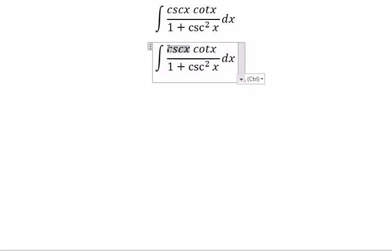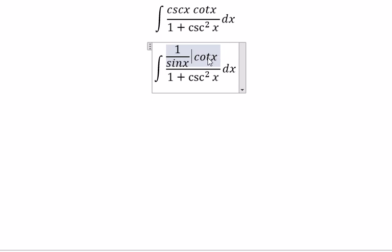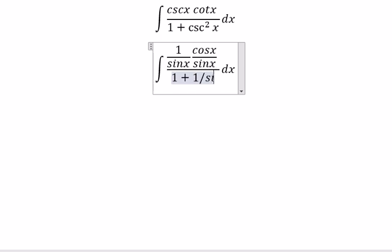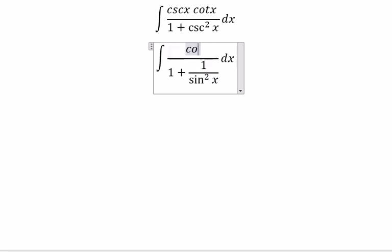For cosecant of x cotangent of x over 1 plus cosecant squared x: We'll write 1 over sine x, then change this to cosine x over sine x, and this one we change to 1 over sine squared x. So this one we can write as cosine x over sine squared x.